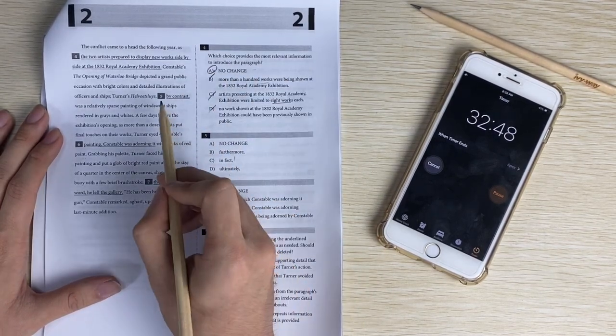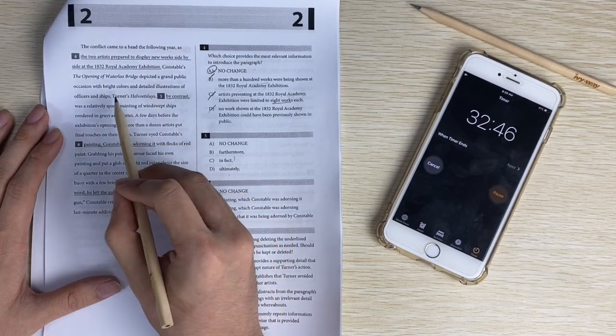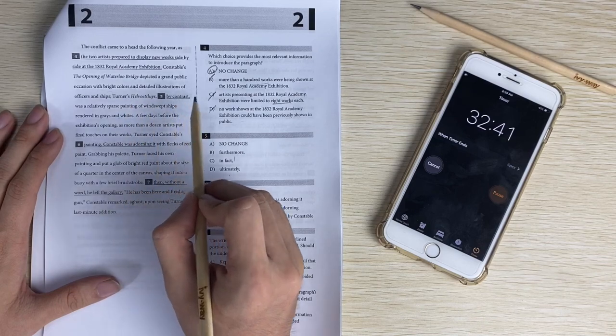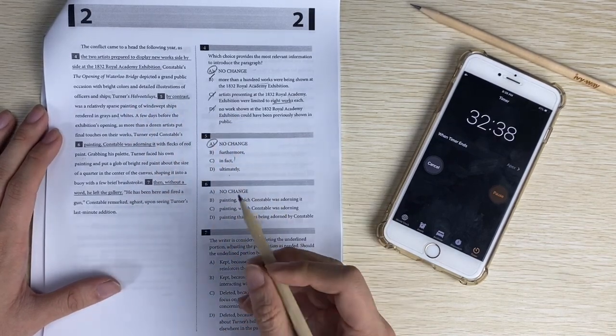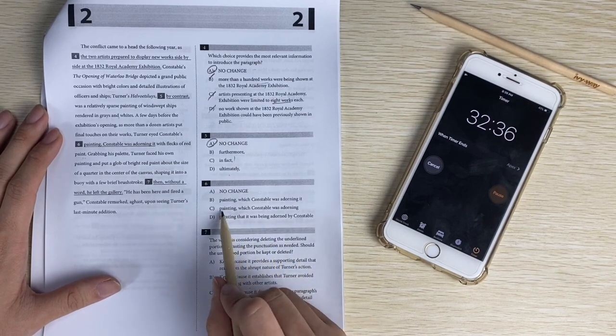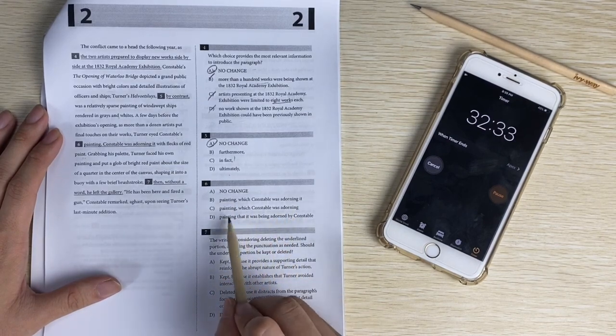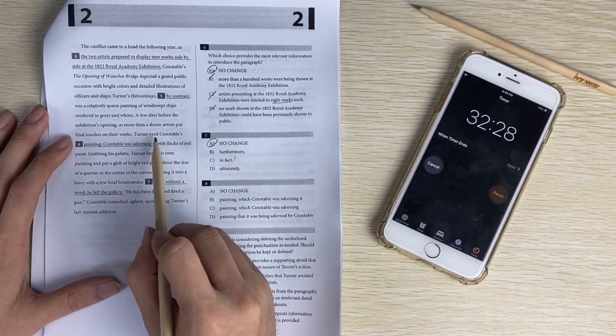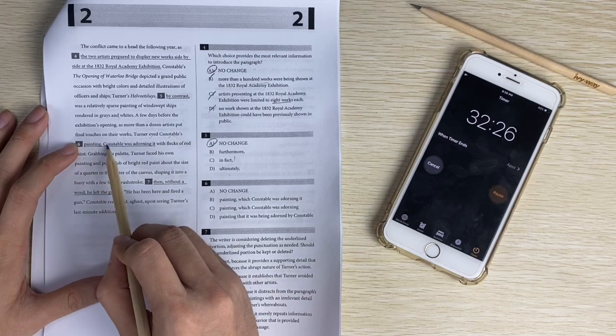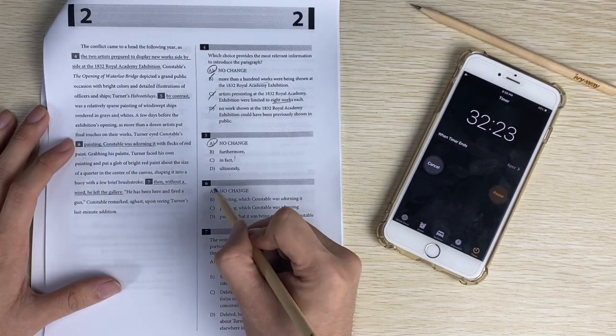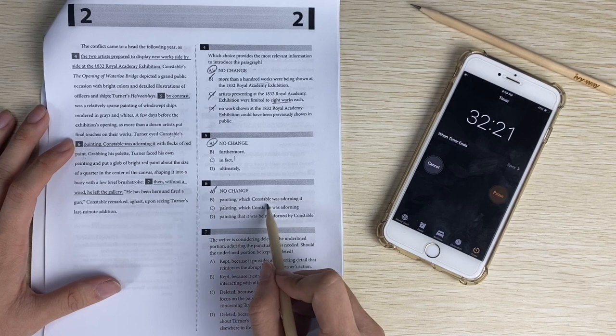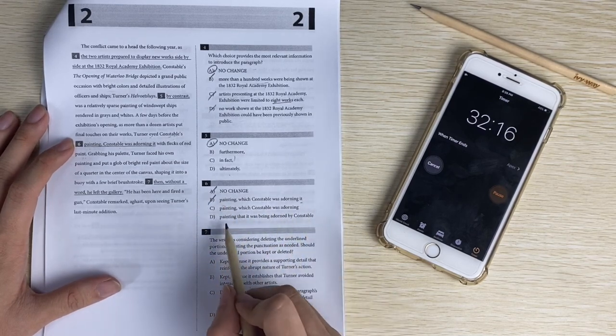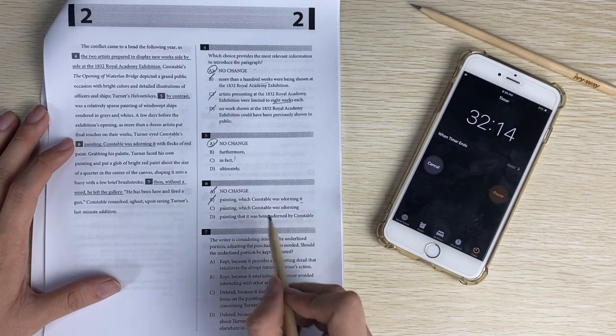Number five, logic. The first work is that his other work by contrast is right, because it's different. Number six, painting which concept was adorning. So he eyed his paintings comma who was adorning it, so that's a run-on. Paintings which he was adorning it - the 'it' is wrong. So it's probably C, painting that it was being adorned. The answer is C.